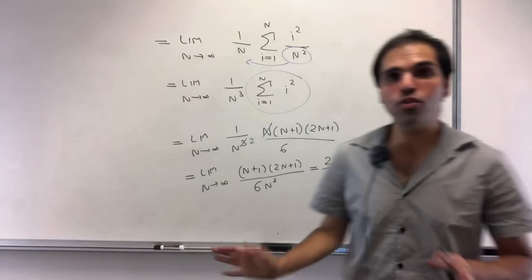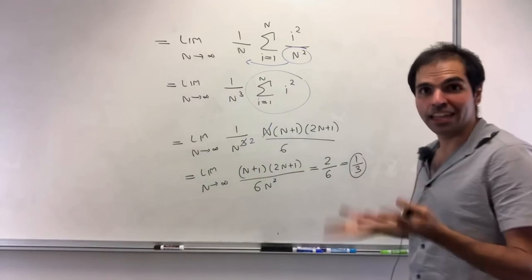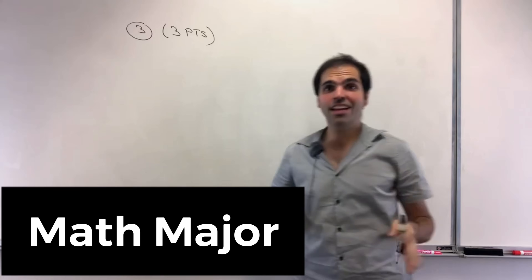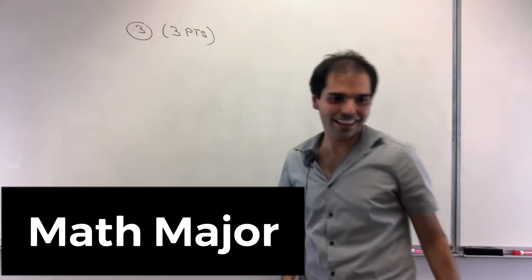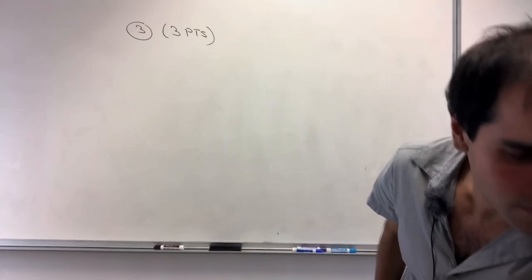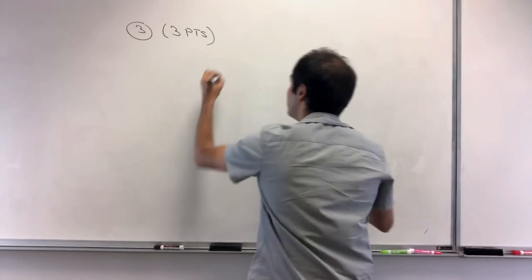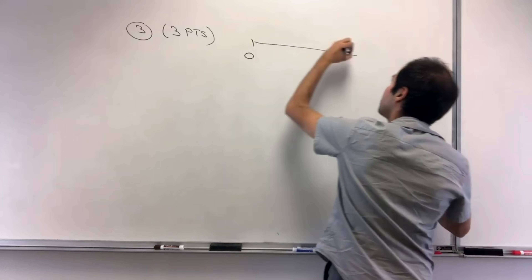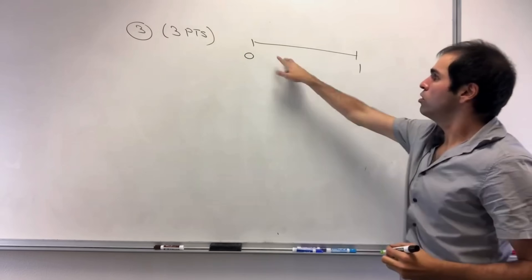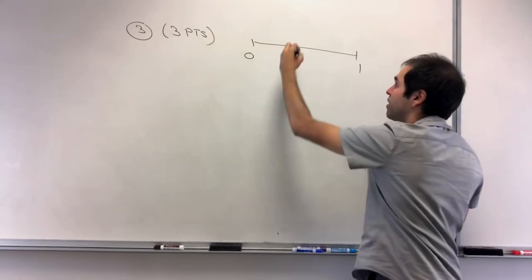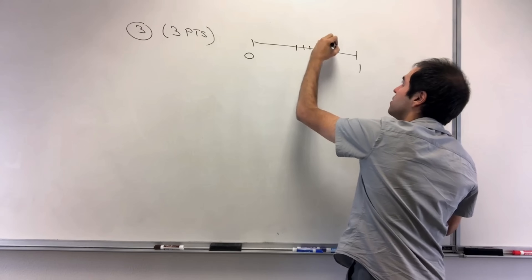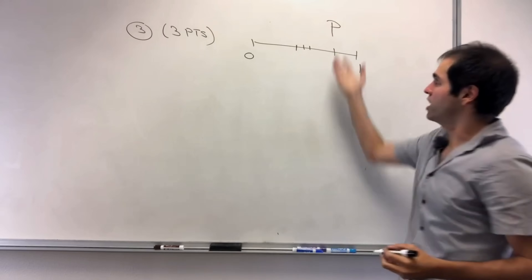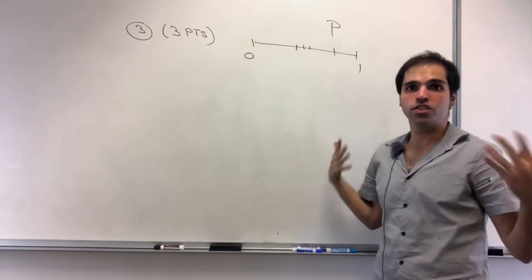Now let's see how to do it once you take real analysis as an undergrad — worth three points. This has to do with partitions, which is a way of subdividing zero to one but not necessarily with the same length. It could have smaller widths here, larger widths there, et cetera. What you get is a partition P — P for partition, not for pi.